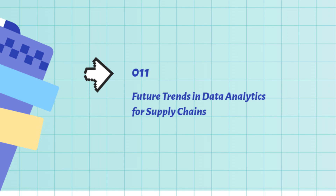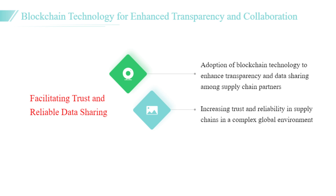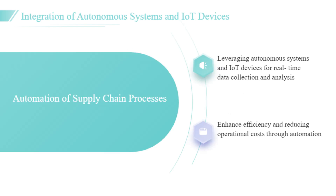Future trends in data analytics for supply chains. Emerging trends in data analytics are set to transform supply chain management further. The adoption of blockchain technology is expected to enhance transparency and data sharing among supply chain partners, facilitating better collaboration and risk management. This technology allows for immutable record-keeping, providing all stakeholders with access to real-time data regarding product provenance and movement. As a result, companies can increase trust and reliability within their supply chains, which is crucial in today's complex global environment.